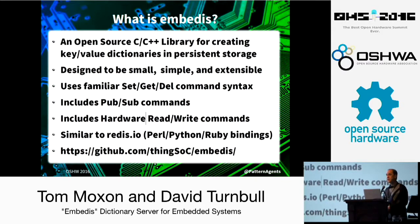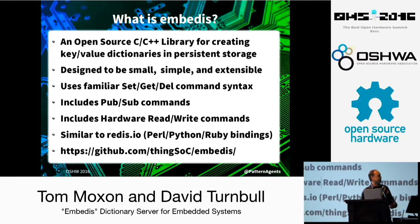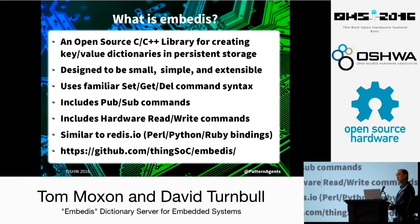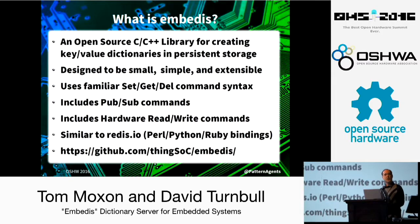That was really how Embedus came about. Embedus also came about because I wanted to work with David — he's an excellent engineer — and we came up with this project as a way to work together. I'm very pleased with how it came out, especially his work on the core key-value store and the implementation of the command line interpreter. Embedus was designed to be small, simple, and extensible. If you're familiar with the Redis protocol, it was designed to be very similar to Redis so we could use a lot of the same bindings — Perl, Python, Ruby — for actually accessing the databases you create within your embedded systems.